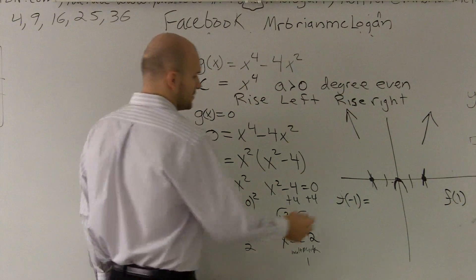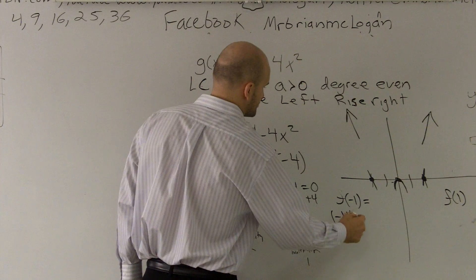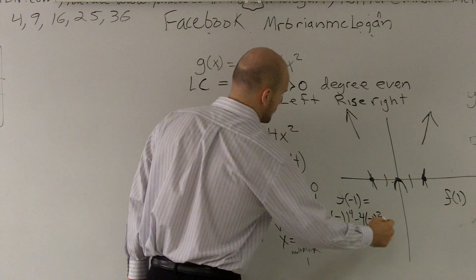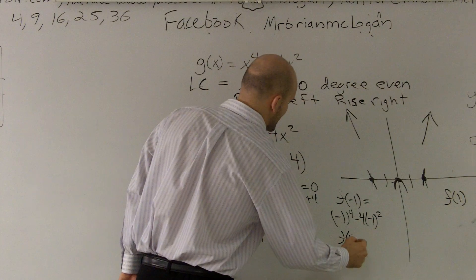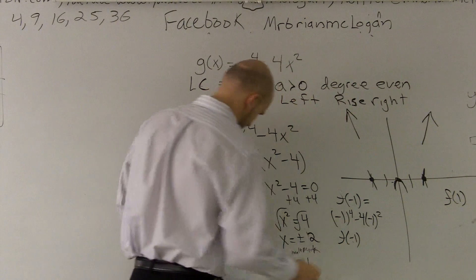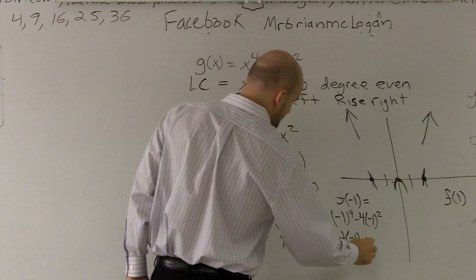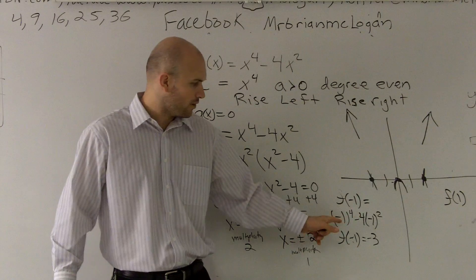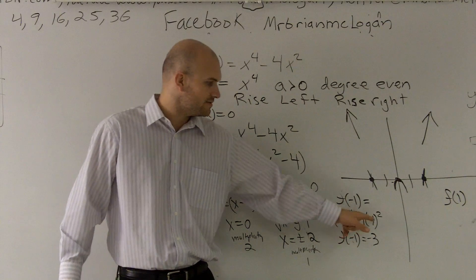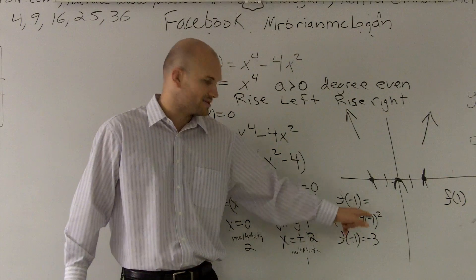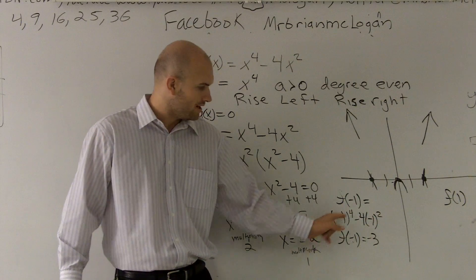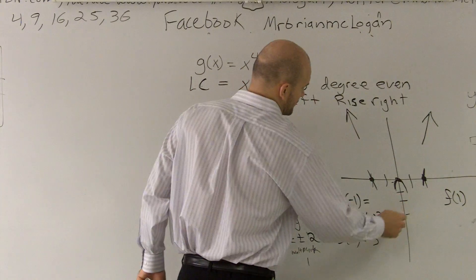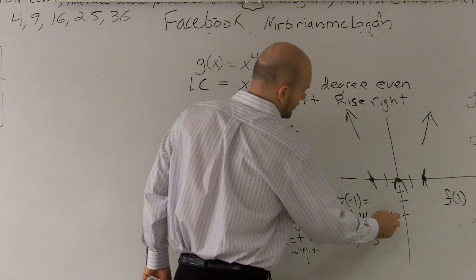So f of negative 1 would be negative 1 to the 4th minus 4 times negative 1 squared. f of negative 1 ends up equaling negative 3. Negative 1 to the 4th power is 1. Minus negative 1 squared is 1. 4 times 1 is 4. 1 minus 4 is negative 3. So I go down to negative 3. 1, 2, 3. I'm going to make a point.